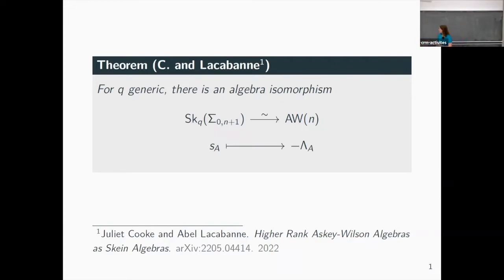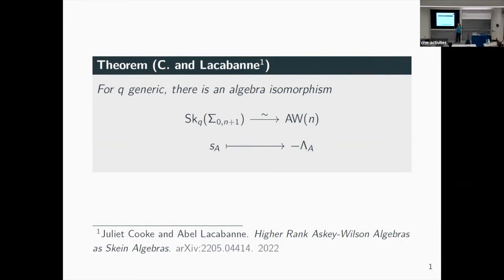This states there is an algebra isomorphism between two algebras: the Kauffman bracket skein algebra — just a bog-standard one — and something called the higher rank Askey-Wilson algebra. The Askey-Wilson algebra of rank n is isomorphic to the skein algebra of the (n+1)-punctured sphere. You take a sphere, remove n+1 discs, and take the skein algebra.